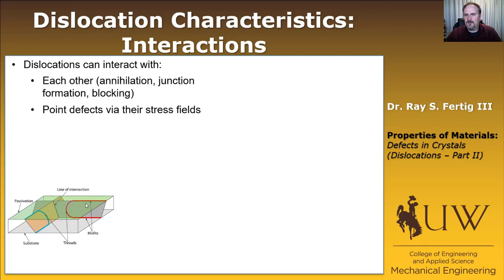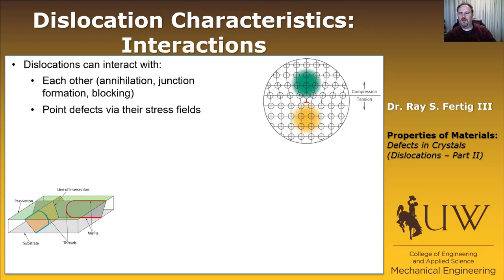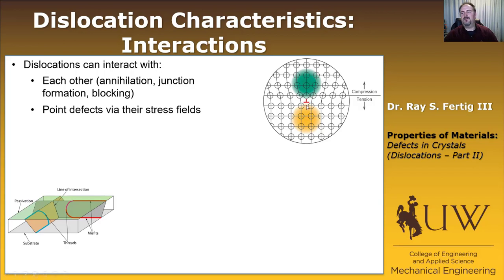The next type of interaction is that dislocations can interact with point defects via their stress field. For example, consider an interstitial: knowing there's a half plane of atoms compressed above the dislocation, the interstitial would prefer to wedge itself into the tension region below. That's a lower energy state, and the dislocation doesn't really want to move from there because it's a lower stress state. So these point defects effectively pin the dislocations and act as blockers.